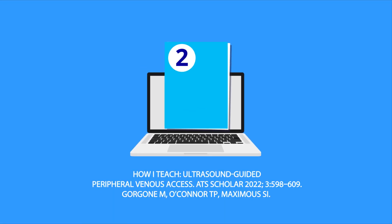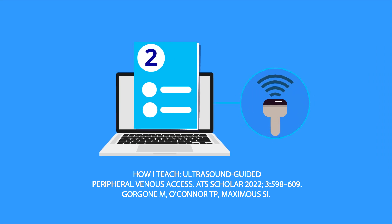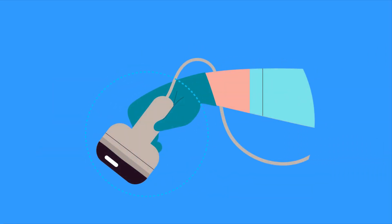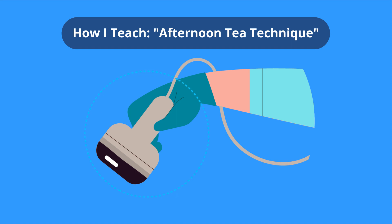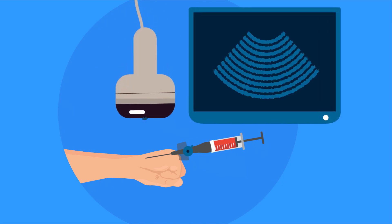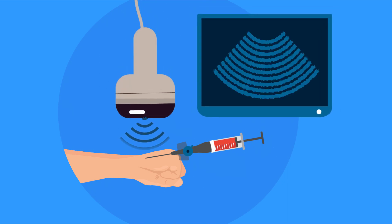Another How I Teach article in our latest issue presents a step-by-step approach to teaching ultrasound-guided peripheral venous access. To explain how to lightly grip the ultrasound probe, the authors recommend using the afternoon tea technique. To instruct trainees on accurate intravenous placement, the authors recommend Dynamic Needle Tip Positioning, or DNTP — a technique where the ultrasound probe is held in place near the needle's tip to facilitate insertion into the desired spot.